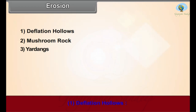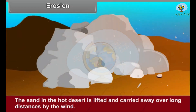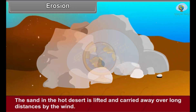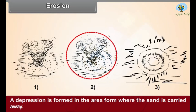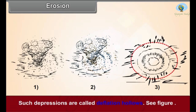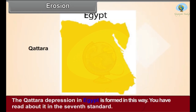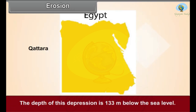Deflation hollows: The sand in hot deserts is lifted and carried away over long distances by the wind. A depression is formed in the area from where the sand is carried away. Such depressions are called deflation hollows. The Qattara depression in Egypt is formed in this way. Its depth is 133 meters below sea level.